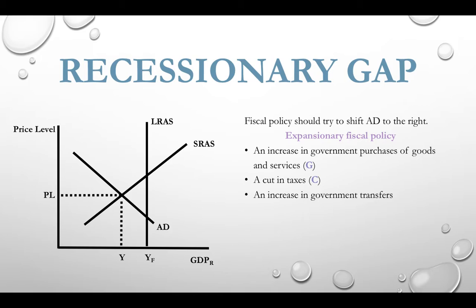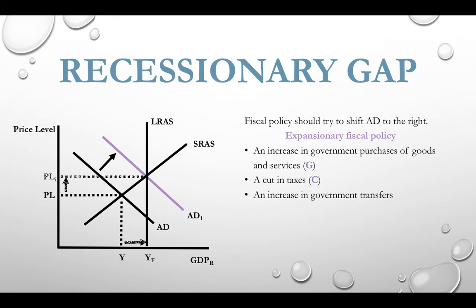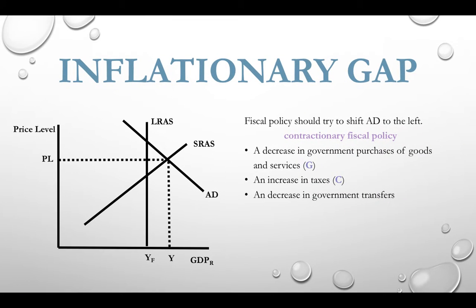Let's look at what's happening with the recessionary gap. You can see that our current output is below full employment output, with current equilibrium and price level represented by Y and PL. In order to fix a recessionary gap, the government wants to engage in expansionary fiscal policy: they can increase government spending G, cut taxes which affects C, or increase transfer payments, which will lead to more spending. The goal is to shift aggregate demand to the right, creating a new aggregate demand curve so that AD, short-run aggregate supply, and long-run aggregate supply all meet at full potential output, with a new higher price level.